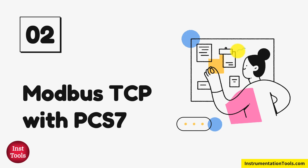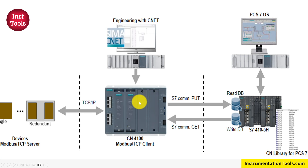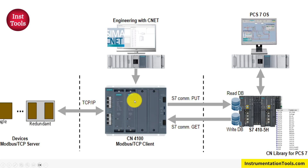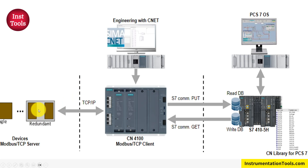Next comes Modbus TCP, which follows Ethernet principles. The solution offered by Siemens is the CN400, which is mainly a Modbus TCP client that takes data from Modbus TCP servers. Since this is a TCP/IP protocol, devices are termed as server and client. On the left side, there are single or redundant Modbus TCP server devices with IP addresses such as 192.168.0.x. The CN400 is available in single and redundant configurations. Configuration and software control is done using the engineering station software CNET, which is used to program the CN400 to configure which TCP servers it needs to pull data from.